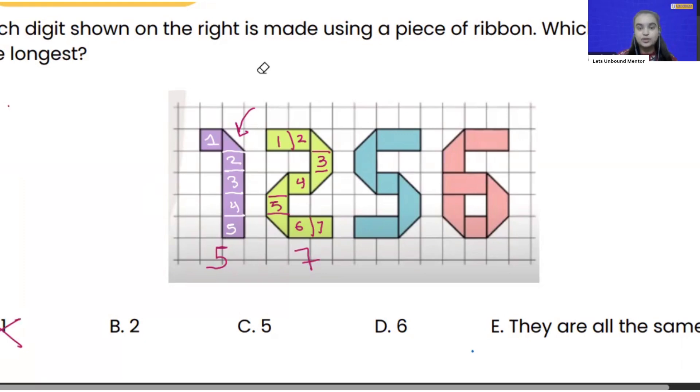Now if I do the same thing for the next digit that is number 5. So let's see how many squares we are going to get. 1, 2, 3, 4, 5, 6, 7. Looks like a tie between 7, 2 and 5. Let's see the 6.